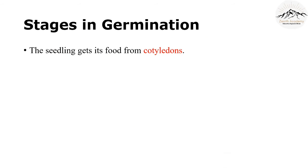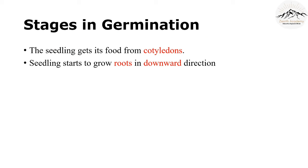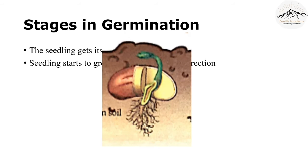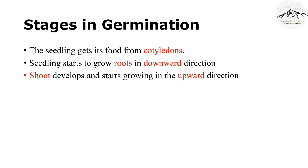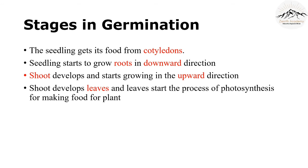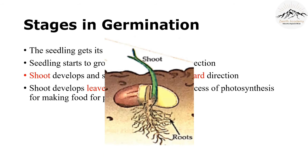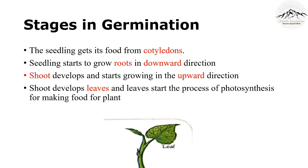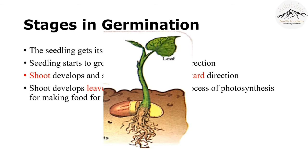The seedling soon starts to grow roots in the downward direction. Why in the downward direction? Because of gravity. In the next stage, the shoot starts developing, and the shoot will then develop leaves. Gravity pulls the roots downward, but the shoot grows upward because it develops leaves which make food for the plant, and for this it requires sunlight and oxygen, which are present in the upward direction in the atmosphere.